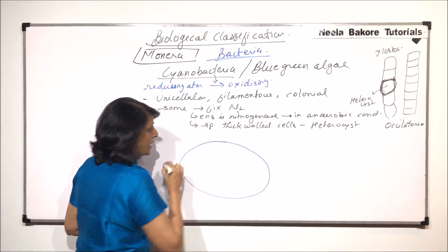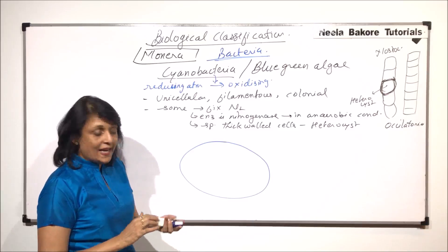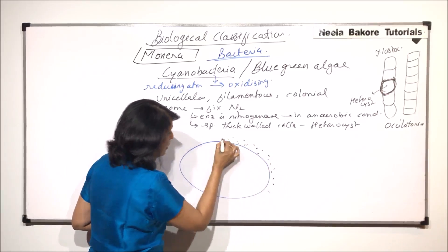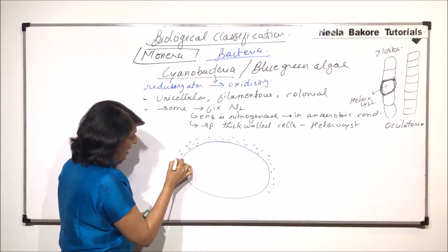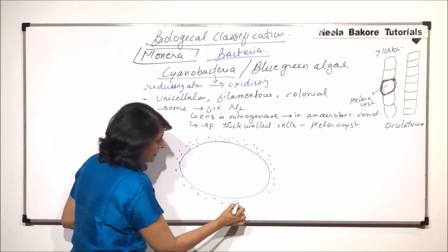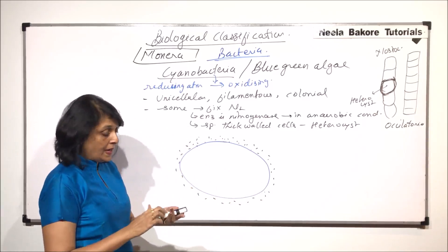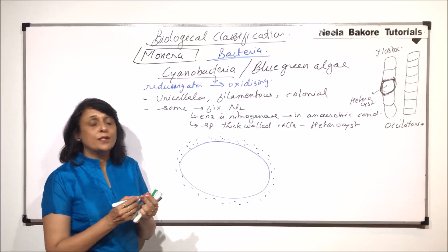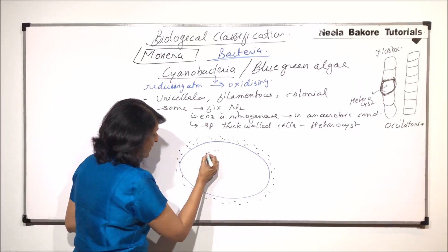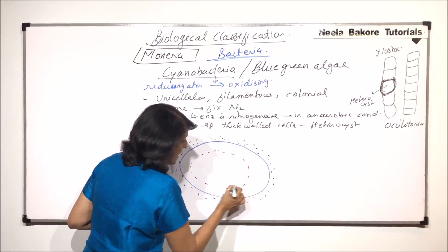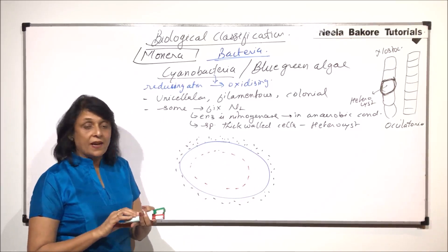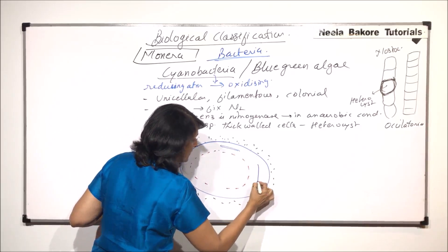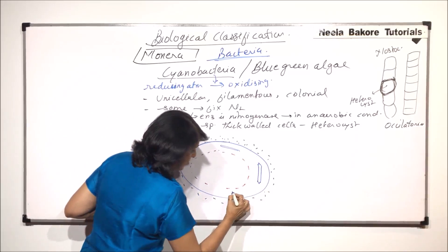This is the same peptidoglycan cell wall but it is multi-layered. Around this, there is gelatinous capsule. This jelly-like material is present outside the thick cell wall and inside this there is cytoplasm. But this cytoplasm is divided into two zones. The outer zone where there are membranous structures present. The membranous structures are called thylakoids. These structures, they are thylakoids.